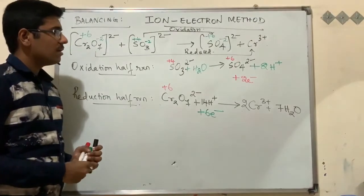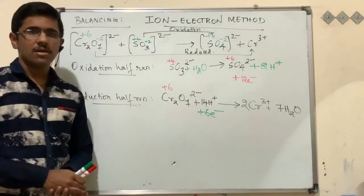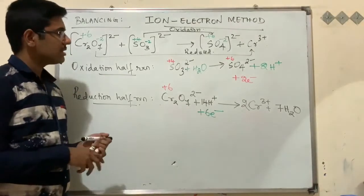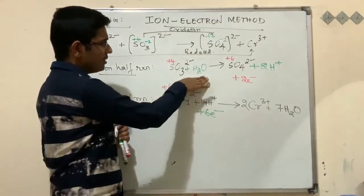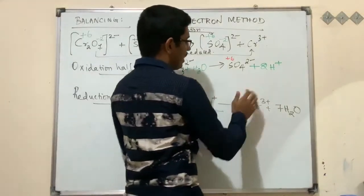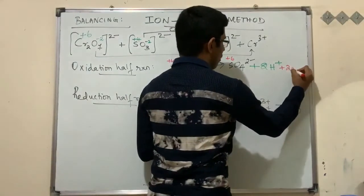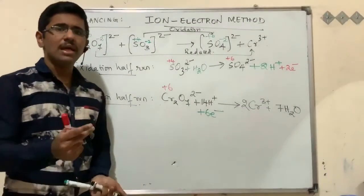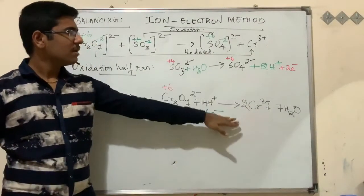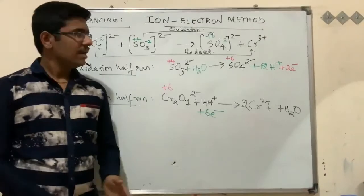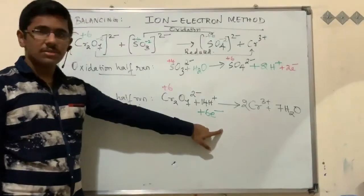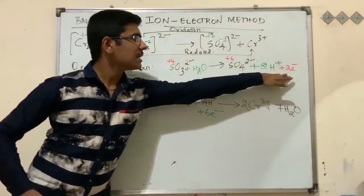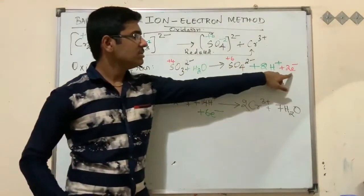Now we combine both half-reactions into one. To combine, the number of electrons must be equal in both reactions. The oxidation half has 2 electrons and the reduction half has 6 electrons. To equalize, multiply the entire oxidation half-reaction by 3, making it 6 electrons on each side.